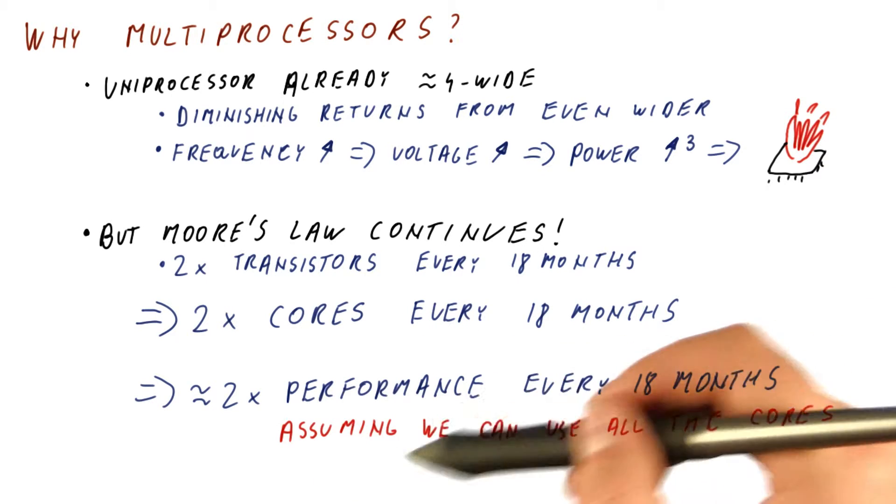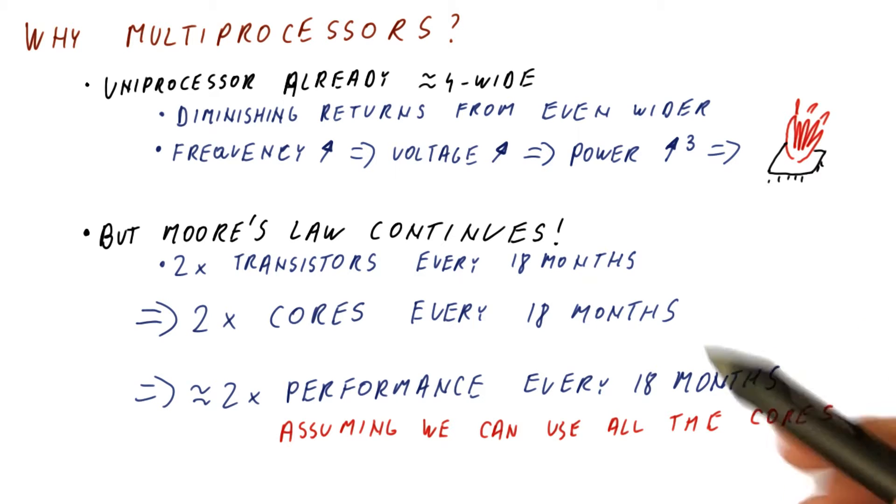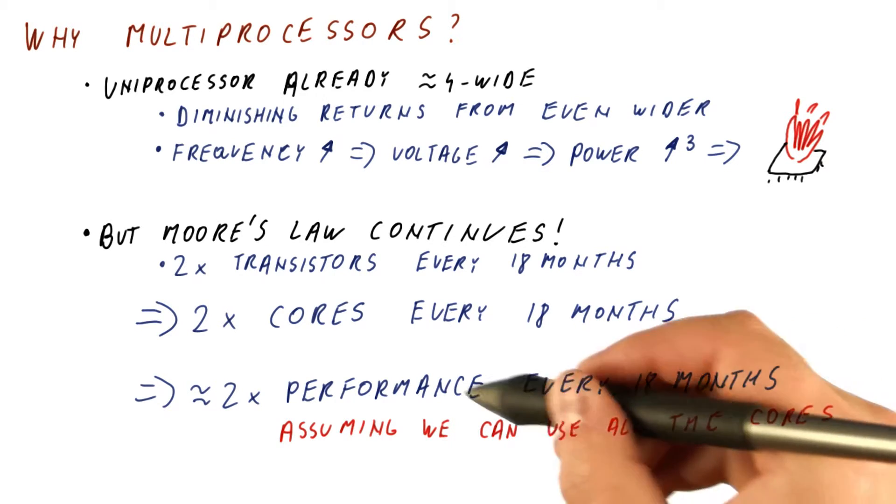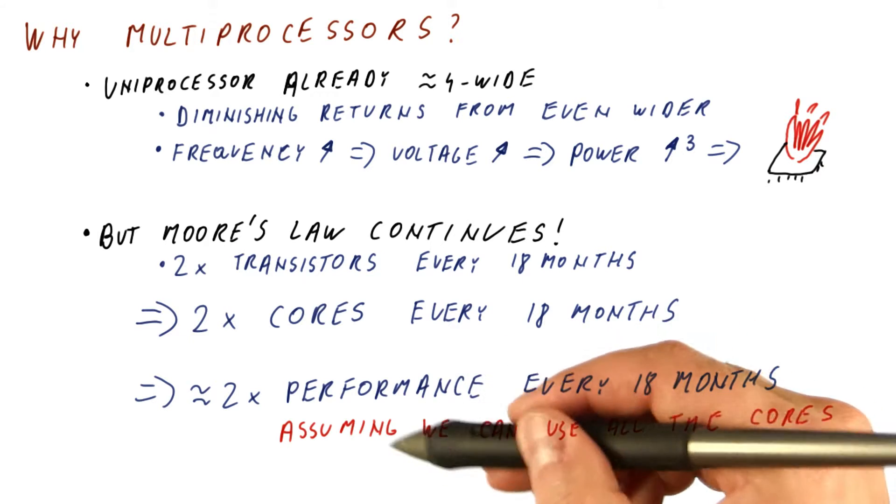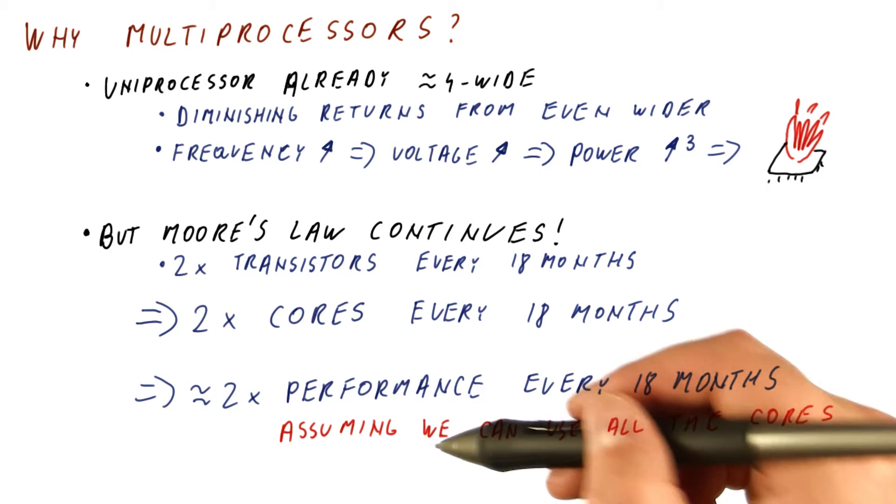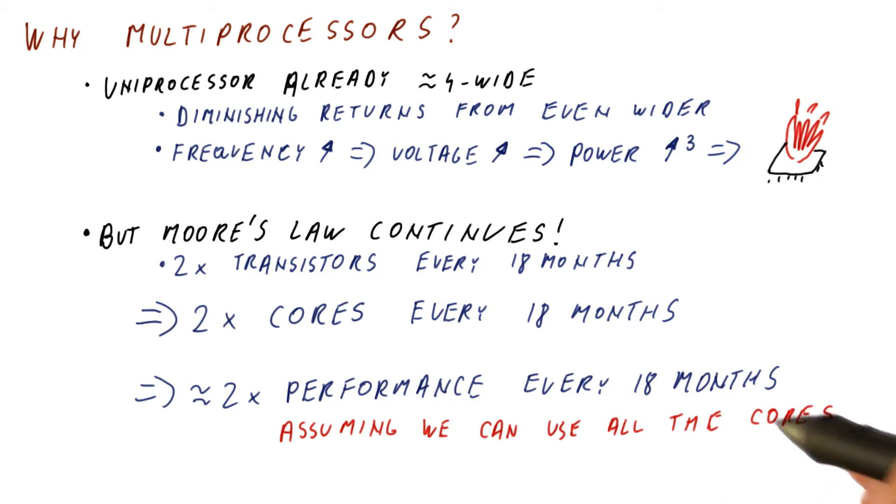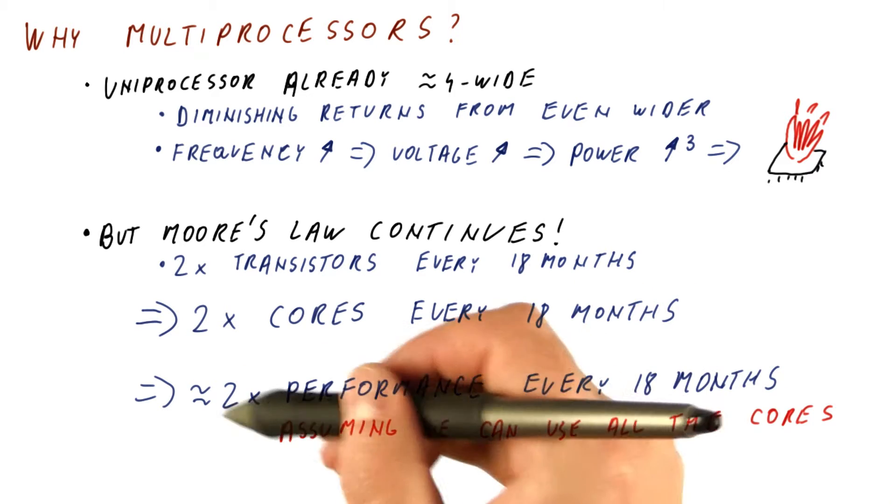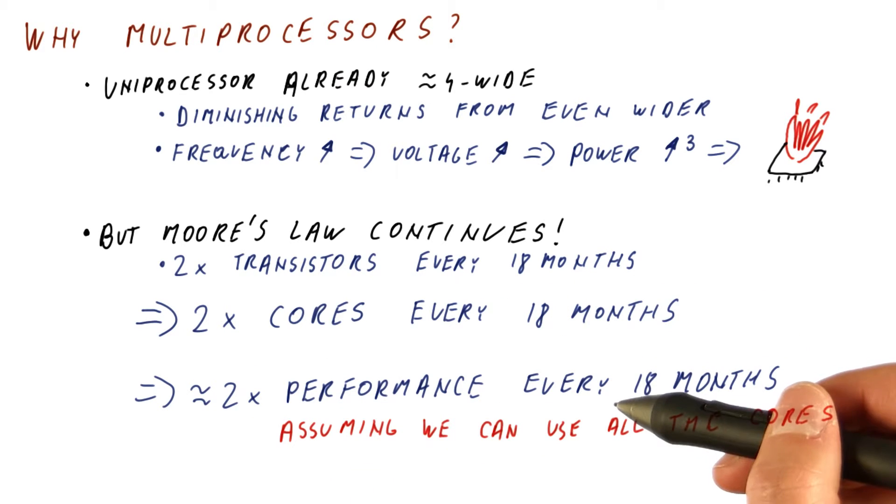That is only if we assume that we can use all the cores. If we only have one program with one thread, then we're really using only one of the cores. It doesn't matter if the number of cores doubles because we are still using one of those cores. So we need programs that are parallel in order to exploit our many core processors that we're getting.